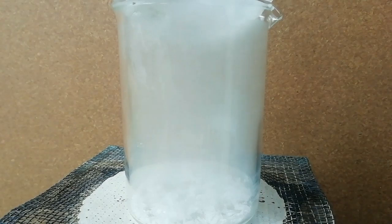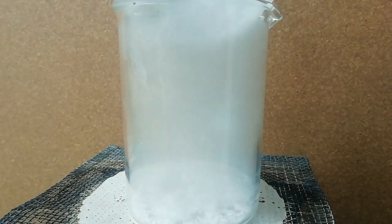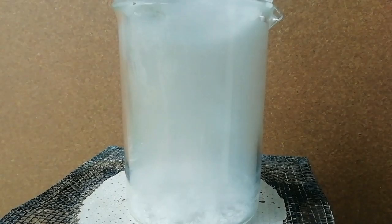Now I heat the beaker until acid begins to melt. After few minutes, you can see some thalic anhydride crystals are formed along the wall of beaker.